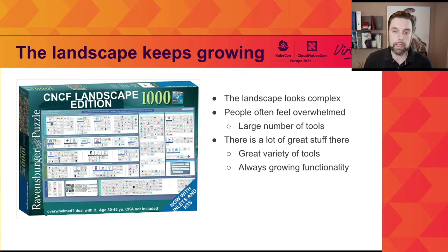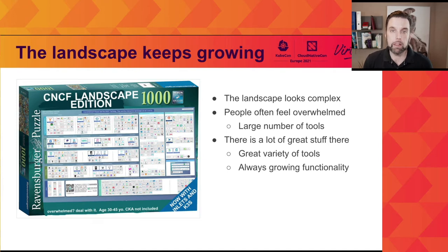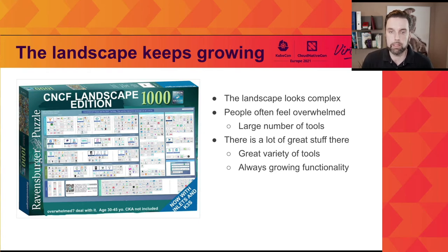When people look at the CNCF landscape, they easily get overwhelmed by what they see. Some people even made a joke and created a 1000-piece puzzle. There's a large number of tools in the landscape, some seem to be doing the same thing, and it's kind of hard figuring out what the individual tools are doing and how they are helping — especially when you want to get started on something like app delivery, you might not know where to start because there are just so many tools.